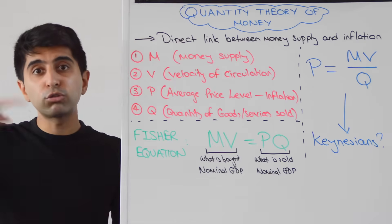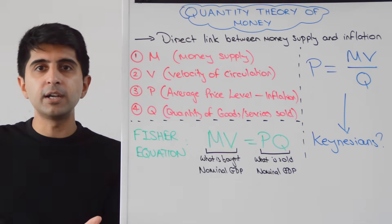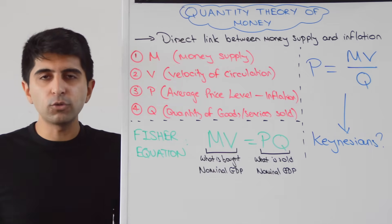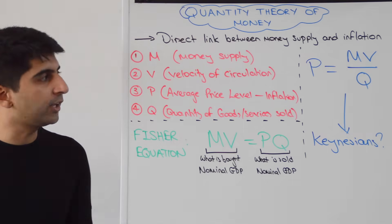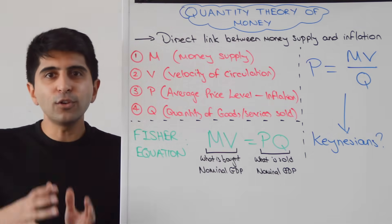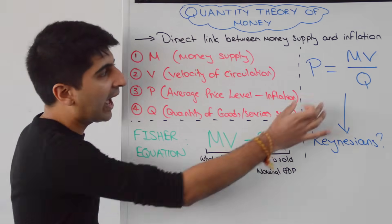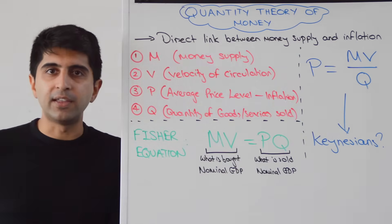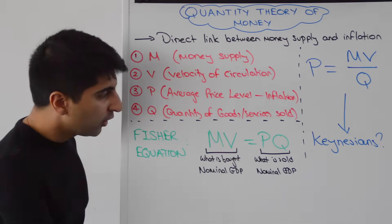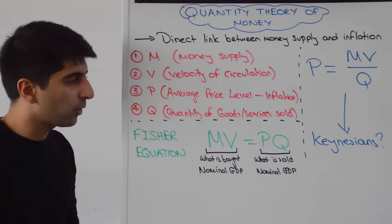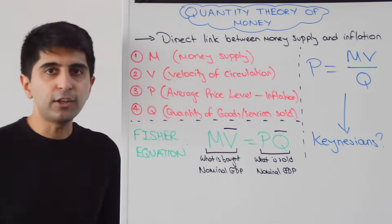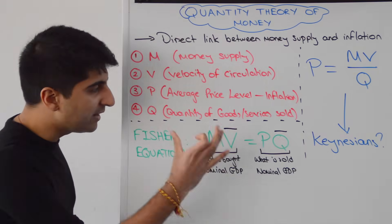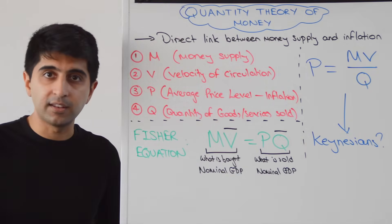Yes, there are deviations when we have recessions and booms. Absolutely. But again, monetarists will argue that real GDP does not deviate by enough to have the influence of prices that we've seen. They will have data to back that up. So what they say, if we go back to our Fisher equation, is that V is fixed and Q is fixed. They don't change by enough to have an influence on prices based on the data that they've used.